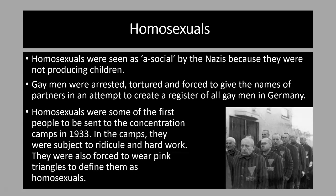Laws were strengthened against homosexuality, meaning more and more homosexuals were sent to concentration camps where they were ridiculed and subjected to hard work. They were forced to wear pink triangles to single them out. One of the most severe measures was that Nazi laws encouraged the voluntary castration of homosexuals. Lesbians were not seen as quite the same level of threat; there was no definitive policy for persecuting them, but they were monitored by the Gestapo and also ended up in concentration camps, typically listed as asocial or political prisoners.